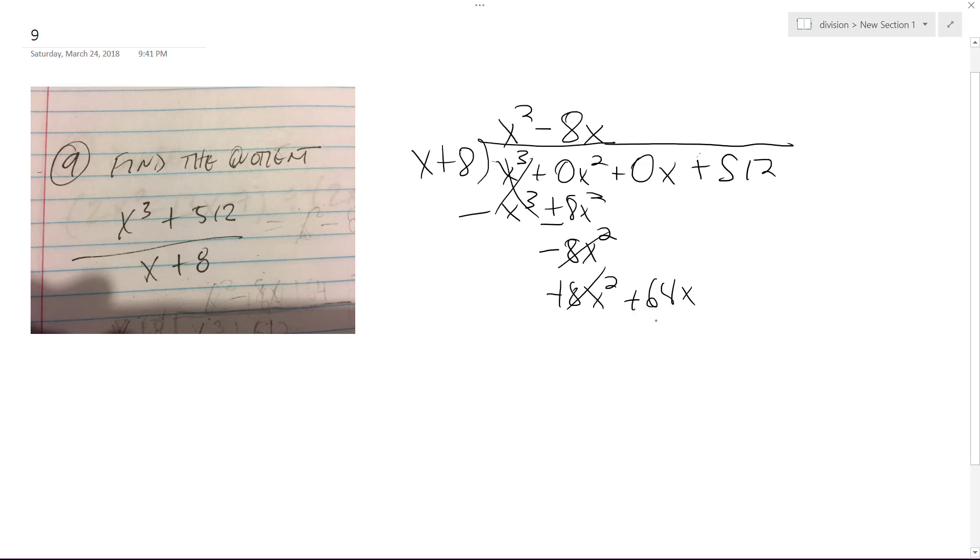It becomes 64x. How many times does x go into that? It goes 64 times, so we get 64x, and then 64 times 8 is 512.